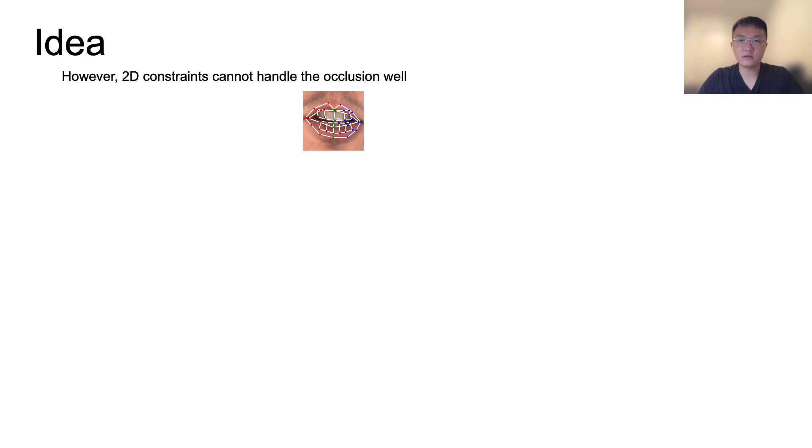However, 2D constraints cannot handle occlusion well. For example, if we want keypoints on teeth which are occluded by the lips, 2D constraints would fail to localize these keypoints. Therefore, we propose two constraints to handle this problem.